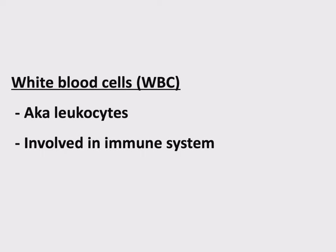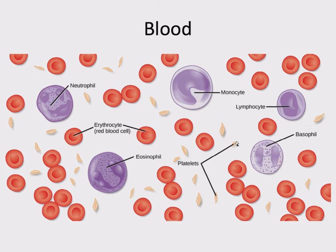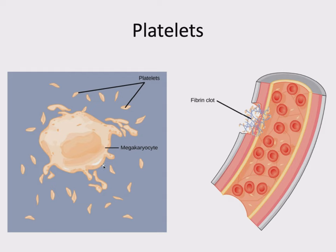We've done plasma and cells — the only thing left is platelets. Platelets are much smaller than a cell. They are not cells — they are cell fragments. You can see this even more clearly when you look at how platelets are made. The megakaryocyte that is making these rips off pieces of its membrane a little bit at a time, and that's how platelets are created. Their job, along with some proteins present in plasma, is involved in clotting.